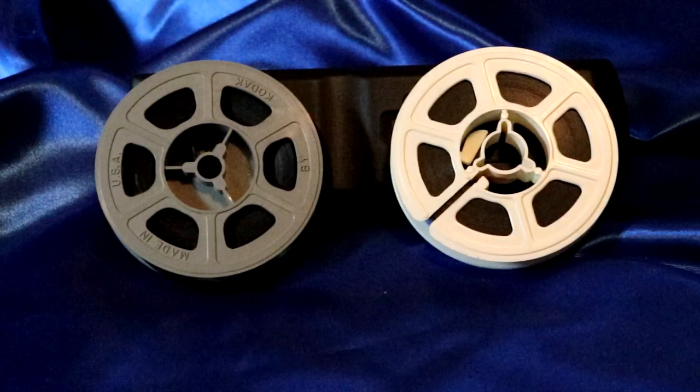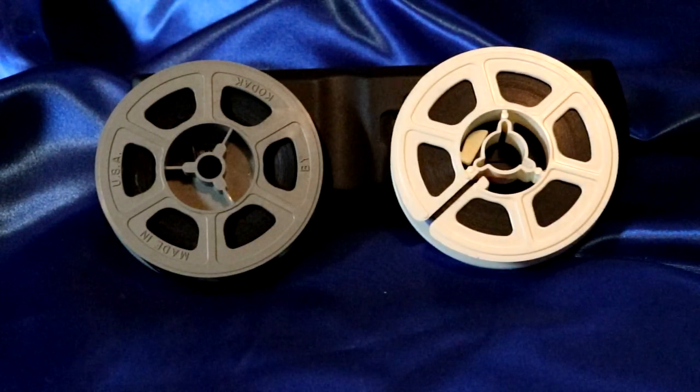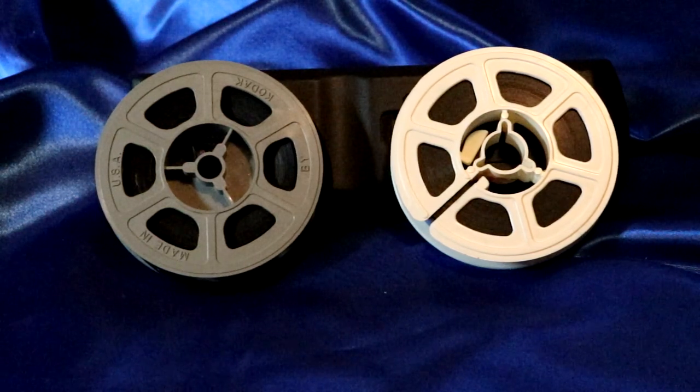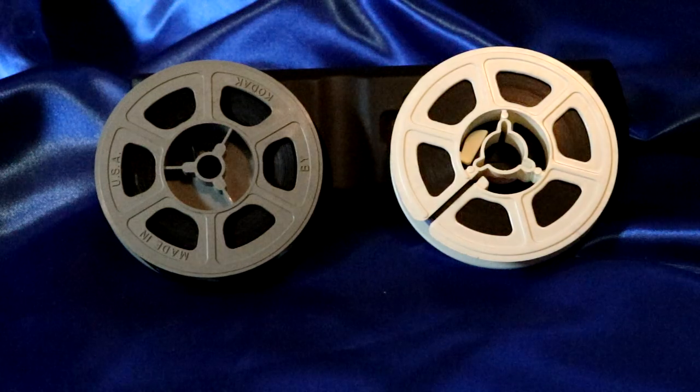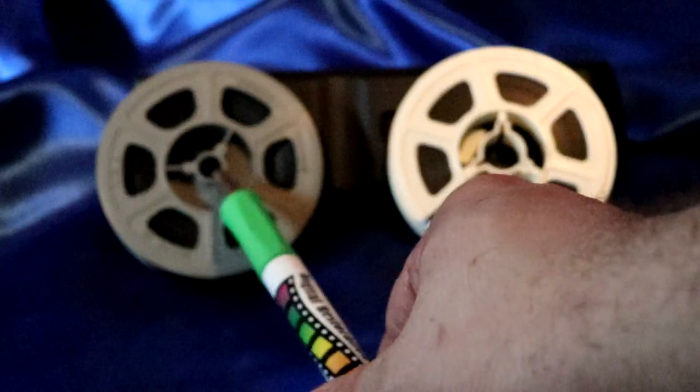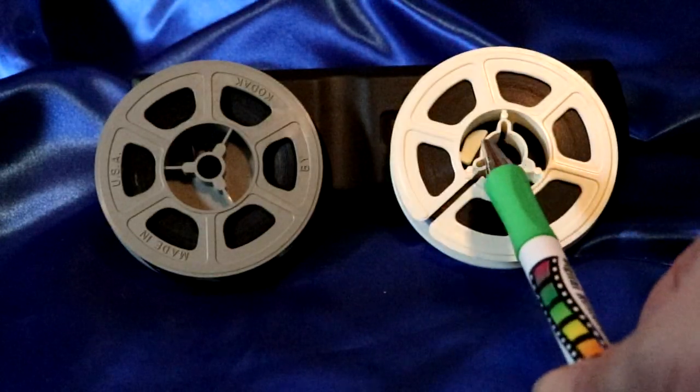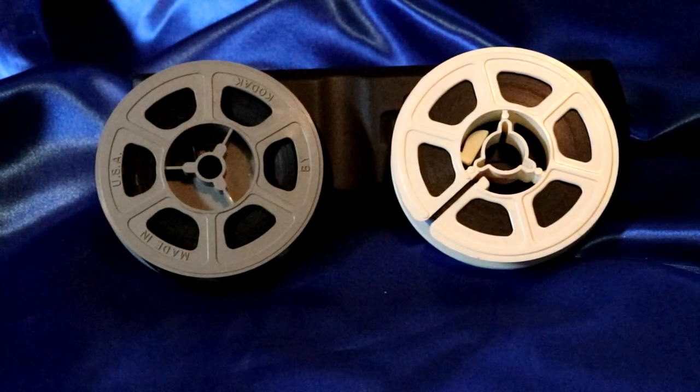After color was introduced to 8mm film in the 1930s, the next big advancement was Super 8 film. The quickest way to tell the difference between Standard 8 and Super 8 is that center hole right there. It is larger in the Super 8 format. And the difference doesn't just stop there.